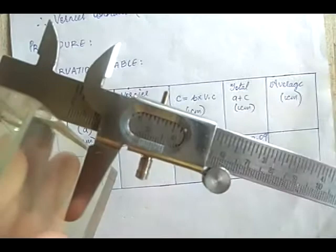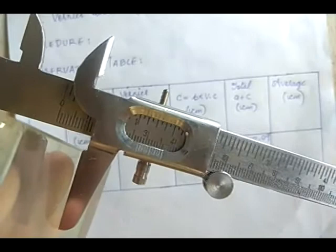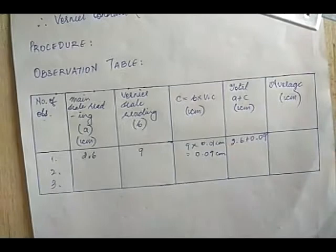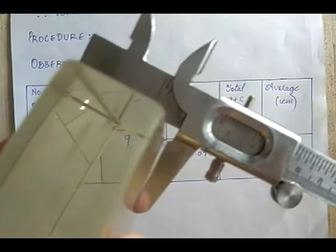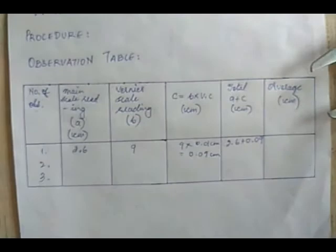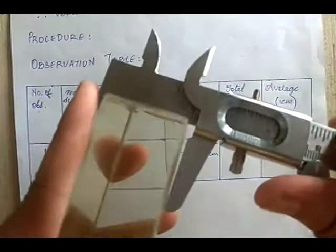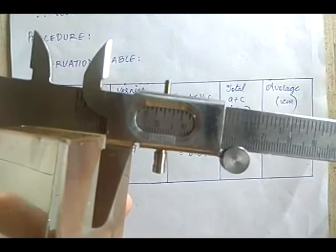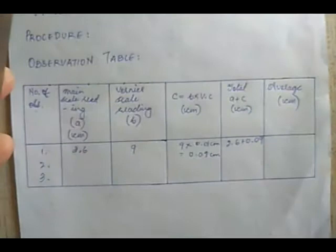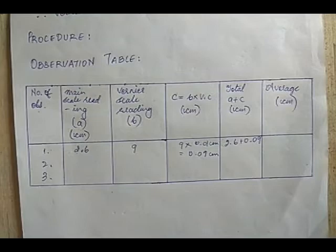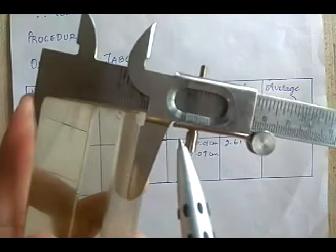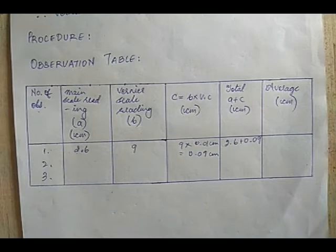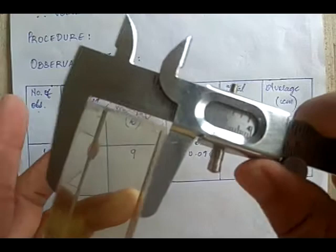For another position of the height, we take the main scale reading and vernier scale reading the same way. One important point: the main scale reading does not change for different observers at the same position, but the vernier scale reading can differ from one observer to another because the power of the eye is different for different persons.